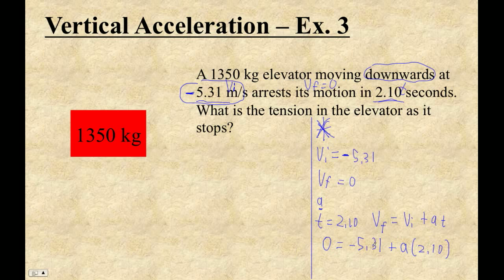So we're going to add 5.31 to both sides of the equation. So this is 5.31 equals A times 2.10. That's how it's positive. Divide by 2.1. We're going to get 2.52857142857, but we'll just take it out to four places: 2.529. So that's meters per second squared, and that's definitely positive.